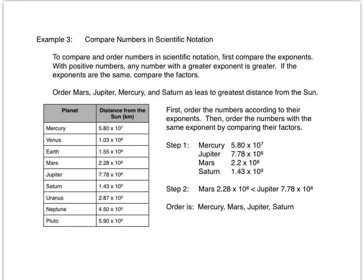In example three, we're going to compare and order numbers in scientific notation. To compare and order numbers in scientific notation, first compare the exponents. With positive numbers, any number with a greater exponent is greater. If the exponents are the same, compare the factors. Let's order Mars, Jupiter, Mercury, and Saturn from least to greatest distance from the Sun. We'll order the numbers according to their exponents. Mercury at 5.80 times 10 to the seventh has the smallest exponent.